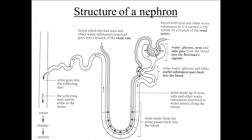Here you've got the distal convoluted tubule. This bit here is known as the loop of Henle. Here you've got the proximal convoluted tubule. And here you've got the Bowman's capsule, and this mass of capillaries here is known as the glomerulus.